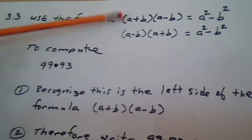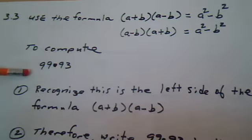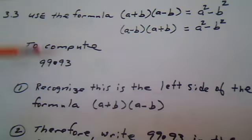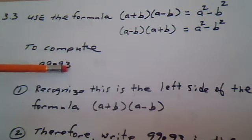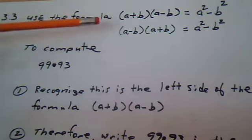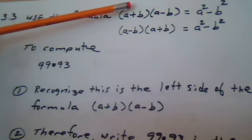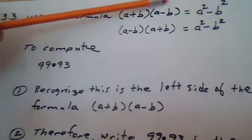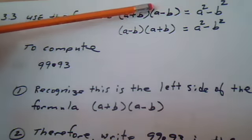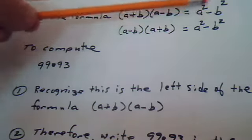Use the formula to compute this multiplication: 99 times 93. This formula has a name, it's called the difference of two squares. Notice they're saying you could write the multiplication like the left side or you could write the multiplication like the right side.